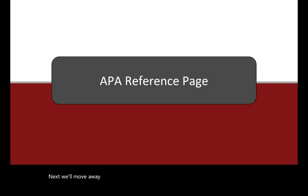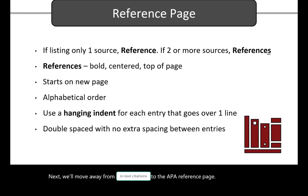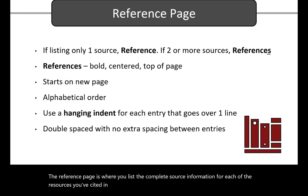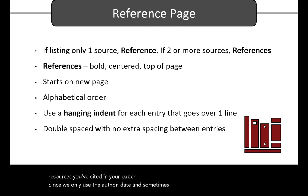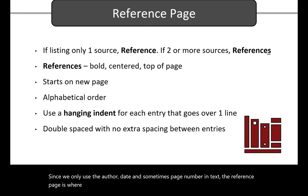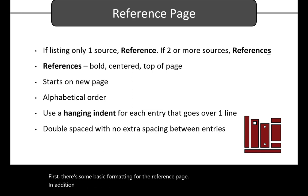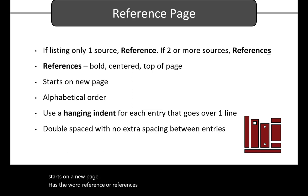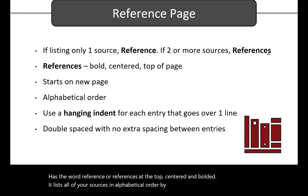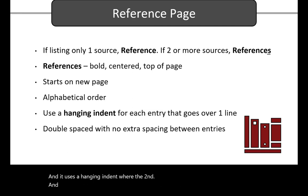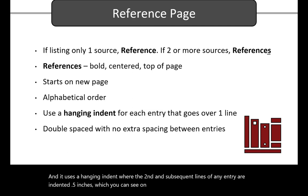Next, we'll move away from in-text citations to the APA reference page. The reference page is where you list the complete source information for each of the resources you've cited in your paper. Since we only use the author, date, and sometimes page number in text, the reference page is where we can include everything else. First, there's some basic formatting for the reference page. In addition to being double-spaced just like the rest of your paper, the reference page starts on a new page, has the word reference or references at the top centered and bolded, it lists all of your sources in alphabetical order by author last name, and it uses a hanging indent where the second and subsequent lines of any entry are indented 0.5 inches, which you can see on the following examples. Always use the hanging indent feature in Word or Google Docs for this.